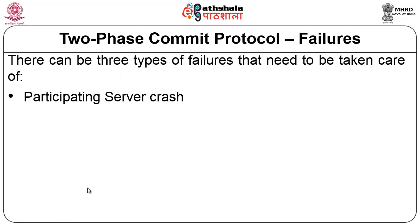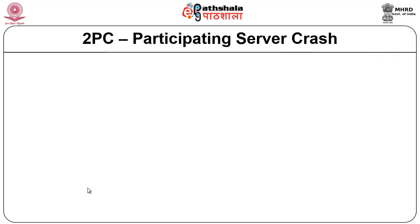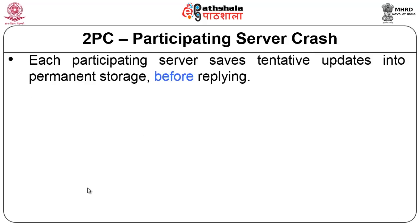What happens when the two-phase commit protocol faces failures? The possible failures are: one or more participating servers may crash, the coordinator may crash (it is a single point of failure), and any number of messages may be lost on the way. Let us look at what happens when one of the participating servers crashes.